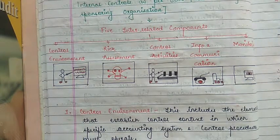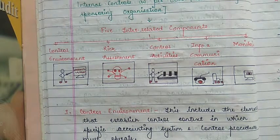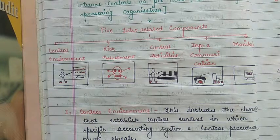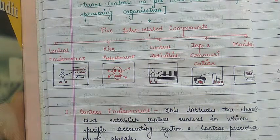Hello everyone and welcome to Learn ISCA by Fun. Let's revise whatever we have done in the last four lectures. We started this chapter with the concept of Enterprise Governance. Enterprise Governance was a set of practices and responsibilities exercised by the board and executive management to achieve objectives, manage risk and verify whether the organization's resources are managed properly.